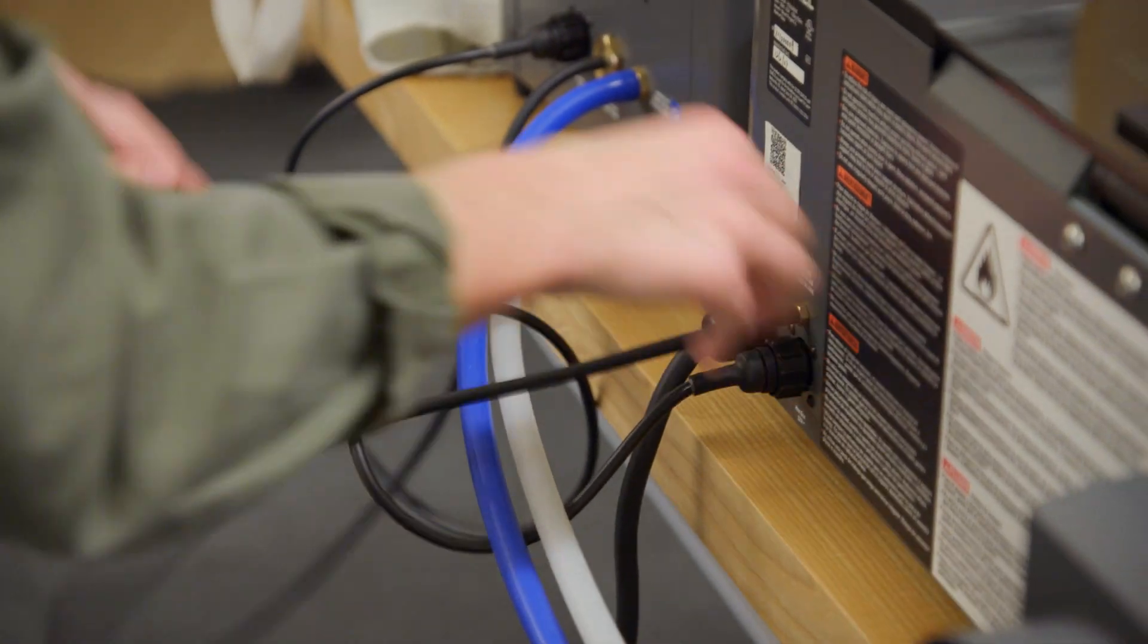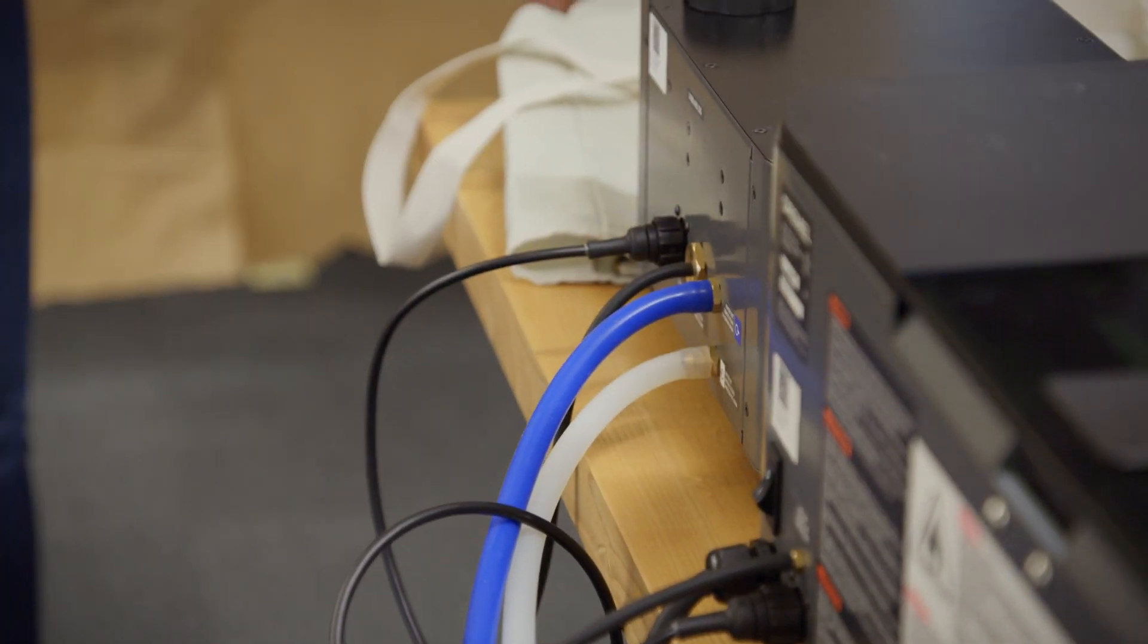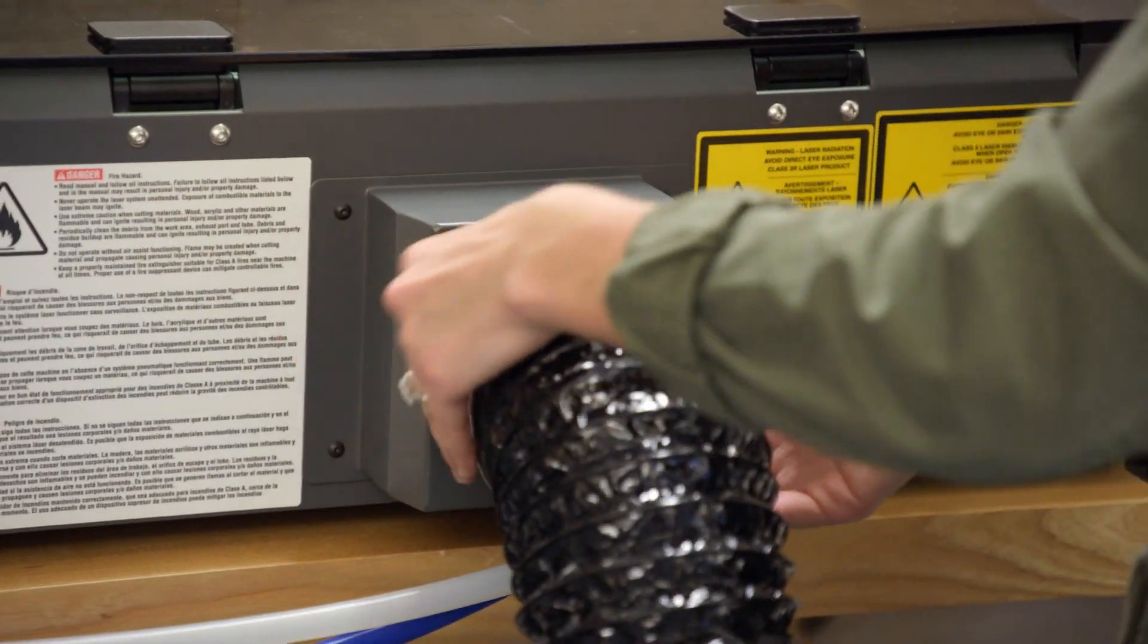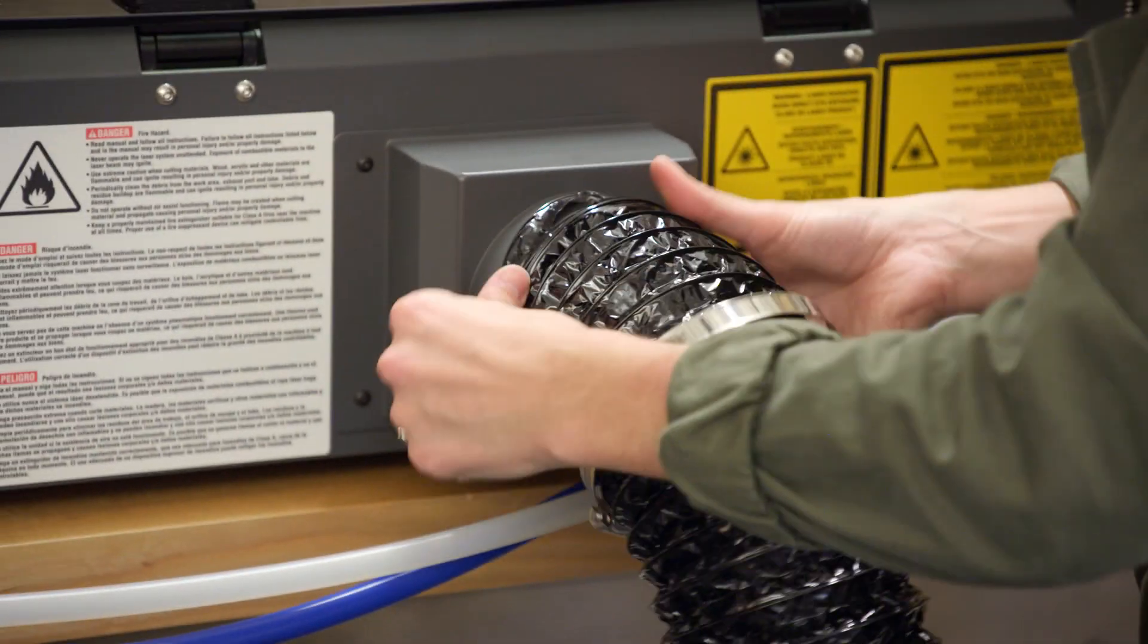And then the air assist tubes. And then the last thing is the ventilation tube. We'll just put the clamp around the tube, put the tube onto the shroud.